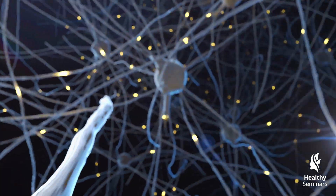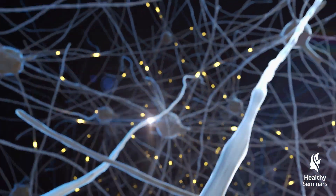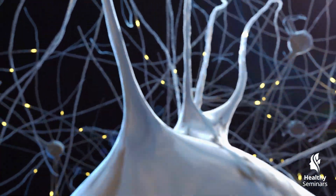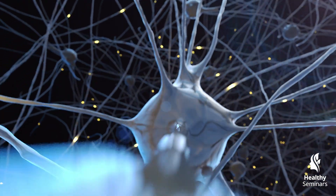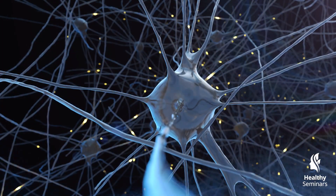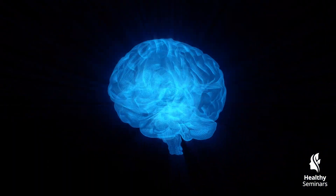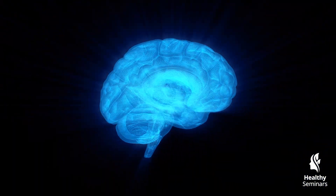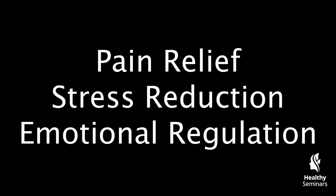These nerve fibers send signals to the somatosensory cortex, limbic system, and periaqueductal gray — regions of the brain associated with pain modulation, sensory processing, and autonomic regulation. This neurological activation helps explain why acupuncture is effective in pain relief, stress reduction, and emotional regulation.